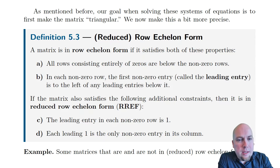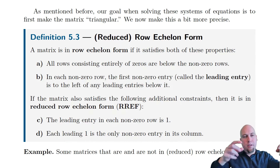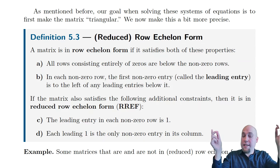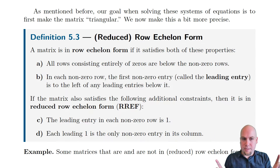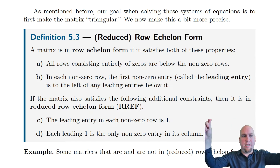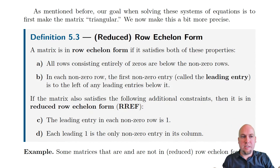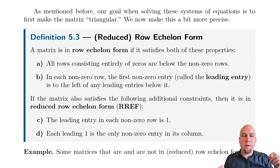The first thing a matrix must have is that every row consisting entirely of zeros must be tucked away at the bottom of the matrix. You can't have a zero row at the top or in the middle — it has to be below every non-zero row.